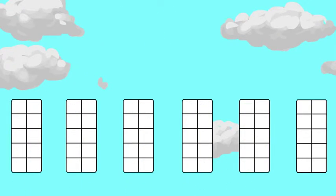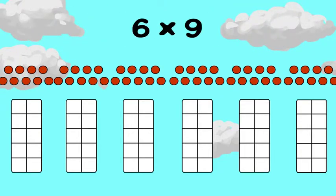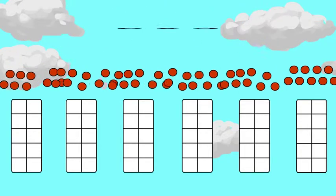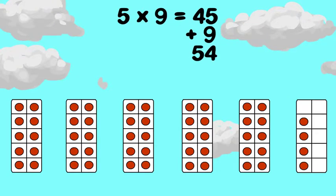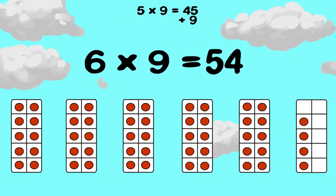Now try six times nine. Five times nine is forty-five. Add one more group of nine. Forty-five plus nine is fifty-four. So six times nine is fifty-four.